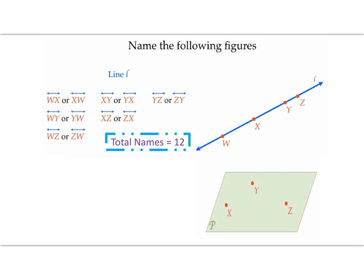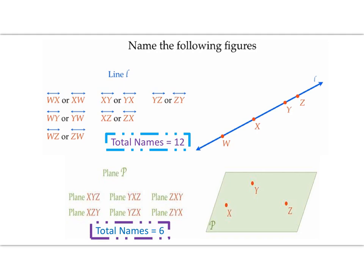Next we have a plane. We can name it using the capital scripted letter in the corner — plane P — or we can say plane XYZ. Any combination of the three non-collinear points also names the plane, giving us a total of six different names for this figure.